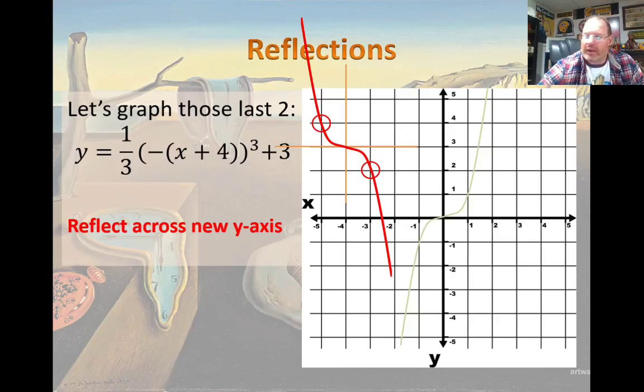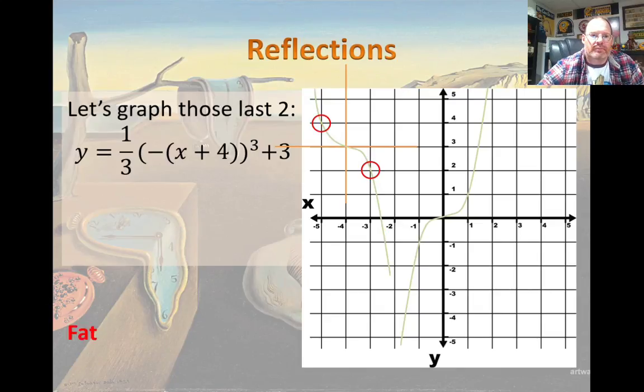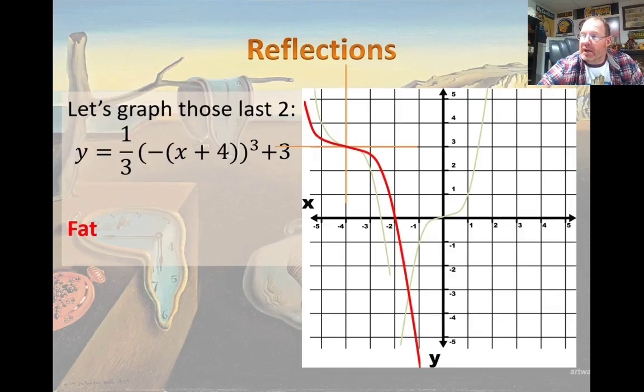It's going to be outside of those 1,1 spots. And so it's going to look like that. And you can see how the 1,1, 3rd compares to the 1,1 spot.